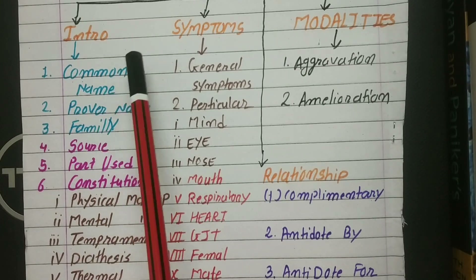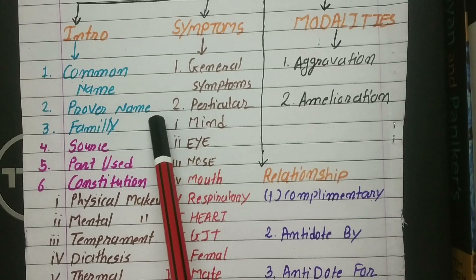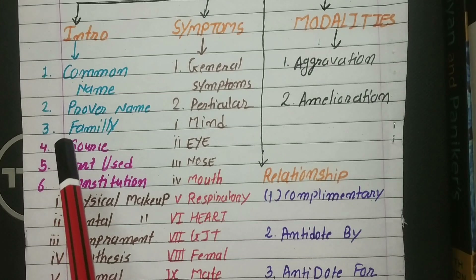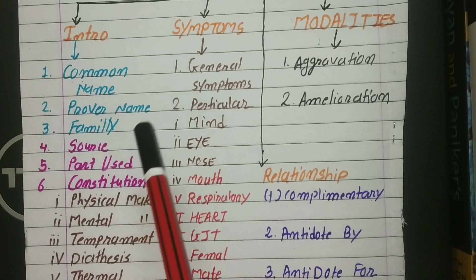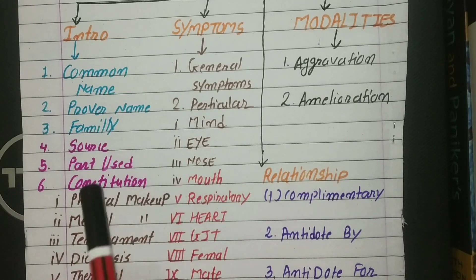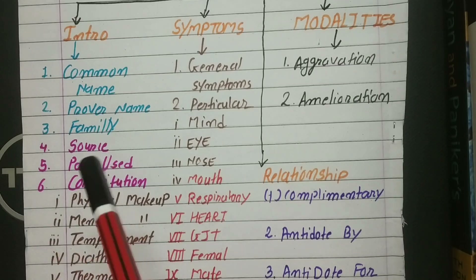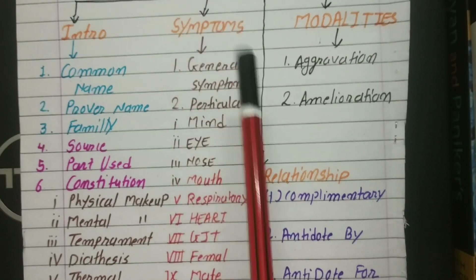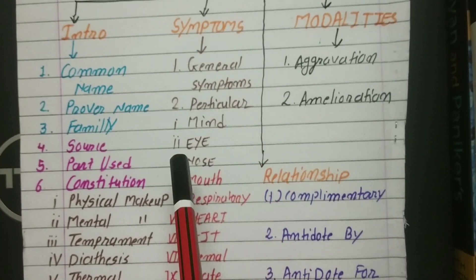So in the introduction, some people only write the common name, prover name, and family name. But that is not enough, especially when we are writing a polycrest remedy or an acute remedy. Think about it: if you are an examiner and there are 100 or 200 papers to check, what do you want to see first?